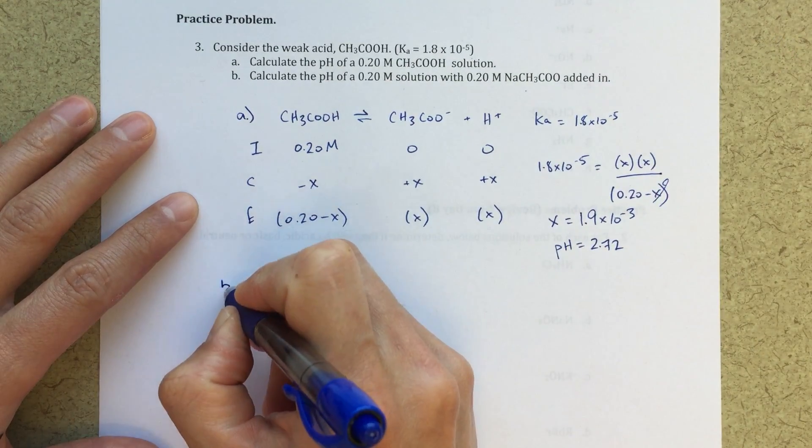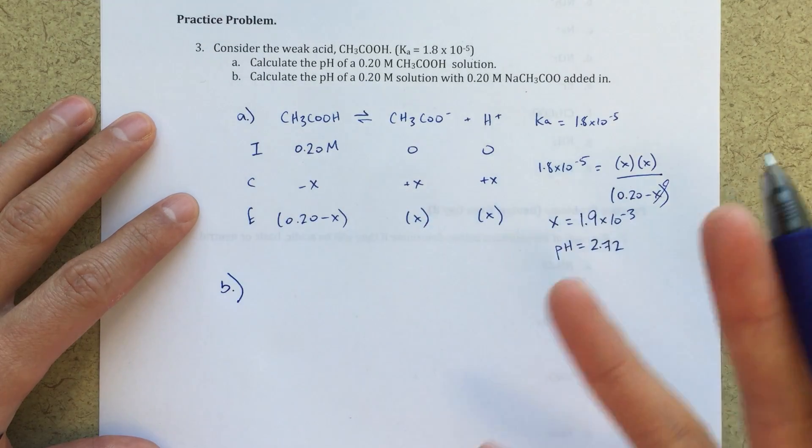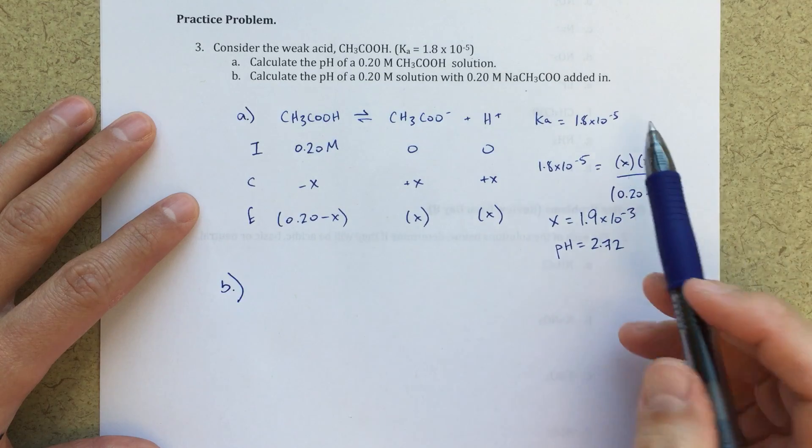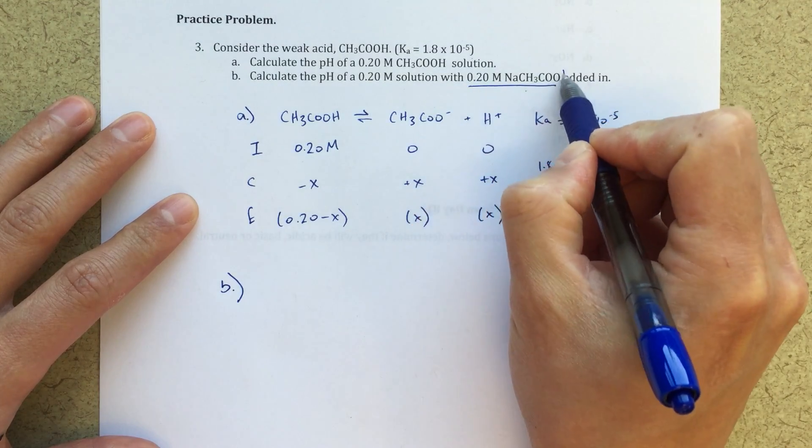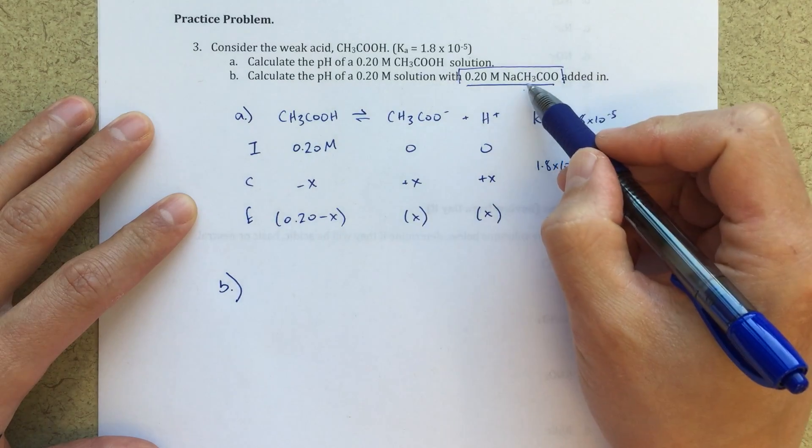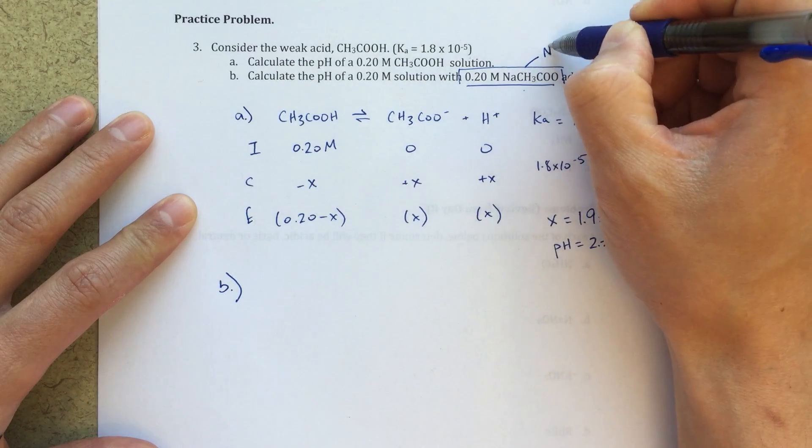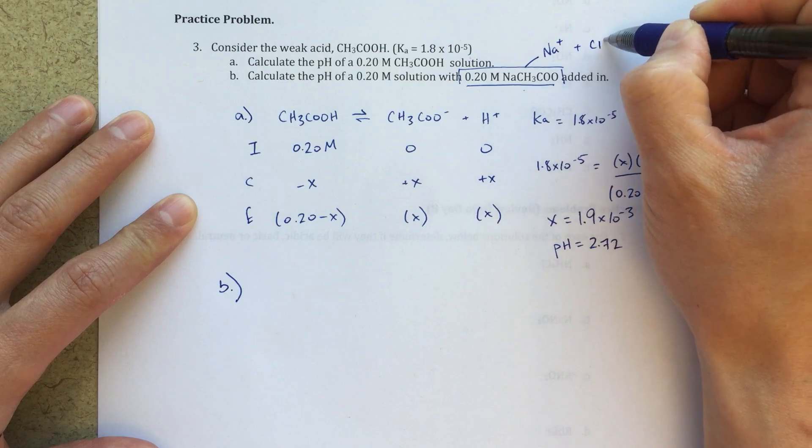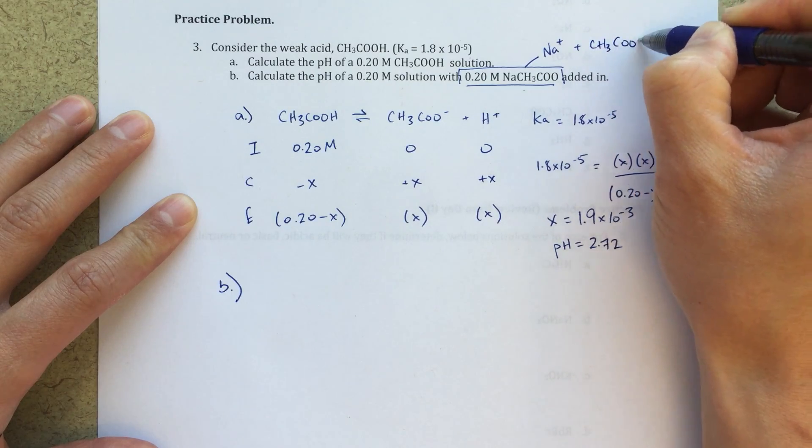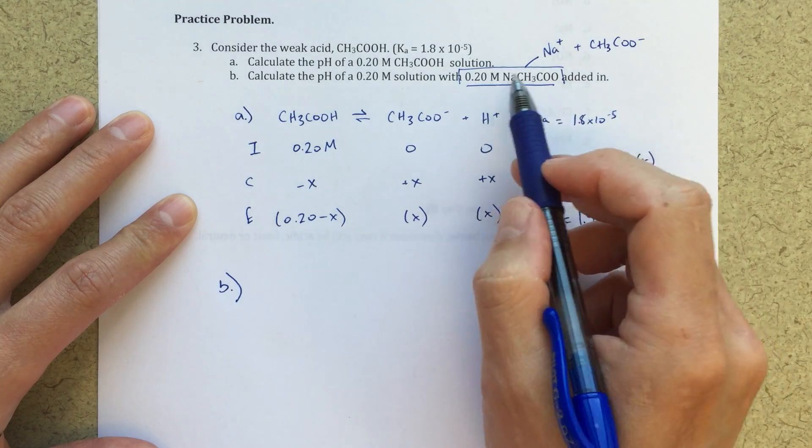Now, in part B, part B is asking us what do we expect to happen, or what will happen essentially, if I add in 0.20 molar NaCH3COO. Sometimes we're going to get a little confused by what this means. Essentially what this is telling us is that we're going to have Na plus ions, just like salt would dissociate, and CH3COO minus ions.